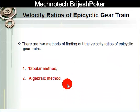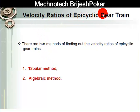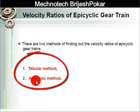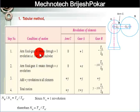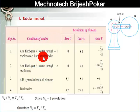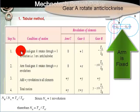Now, how can we find the velocity ratio of an epicyclic gear train? There are two types of methods: the first is the tabular method and the second is the algebraic method. In the tabular method, we use a table to calculate the velocity ratio. Step one: we assume the arm is fixed.